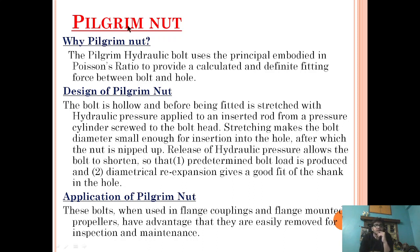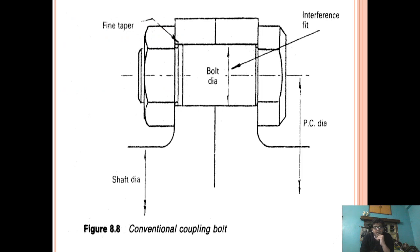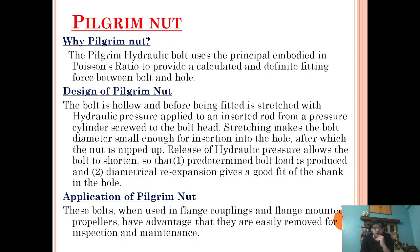The concept of the pilgrim nut came up because of these problems. The pilgrim nut bolt uses a principle embedded in Poisson's ratio to provide a calculated and defined fitting force between the bolt and the hole. In the conventional coupling bolt, the problem was not with the interference fit itself — when fitting an oversized bolt, we were obtaining a good interference fit which is very good for load transmission — but the method used, liquid nitrogen cooling, was causing brittleness in the steel.